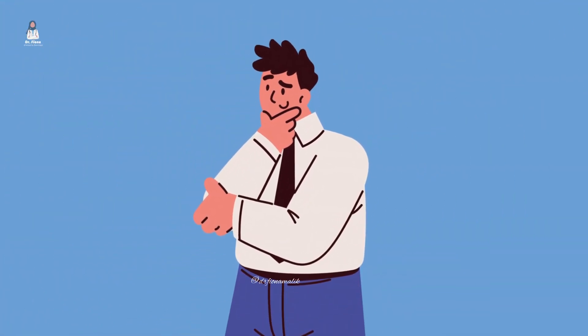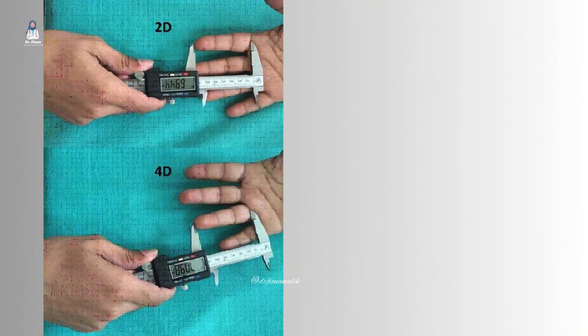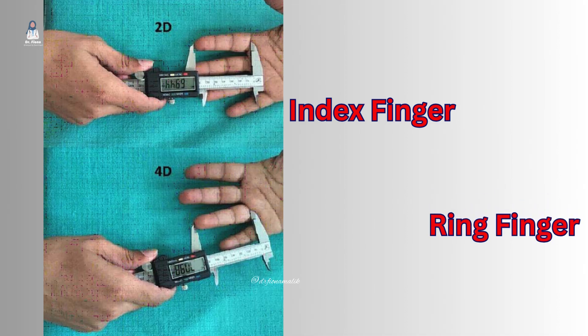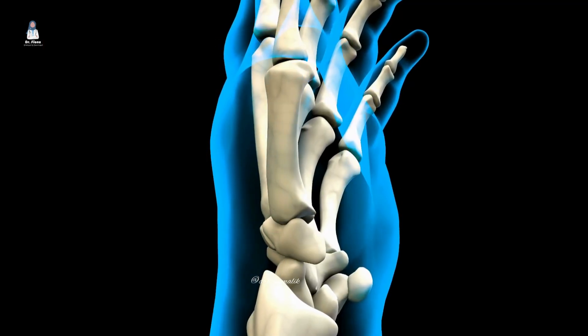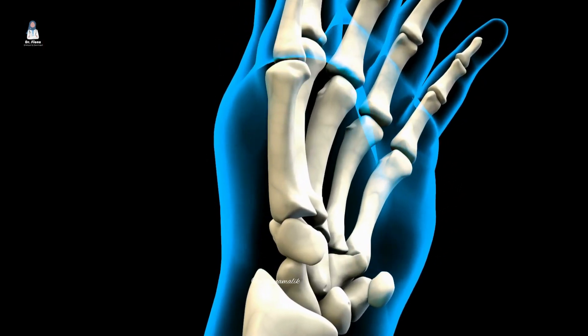What exactly is the second to fourth digit ratio? Actually, it's the ratio of the length of your index finger to your ring finger. This ratio is often referred to as the 2D to 4D ratio. It's a fascinating aspect of human biology, isn't it?